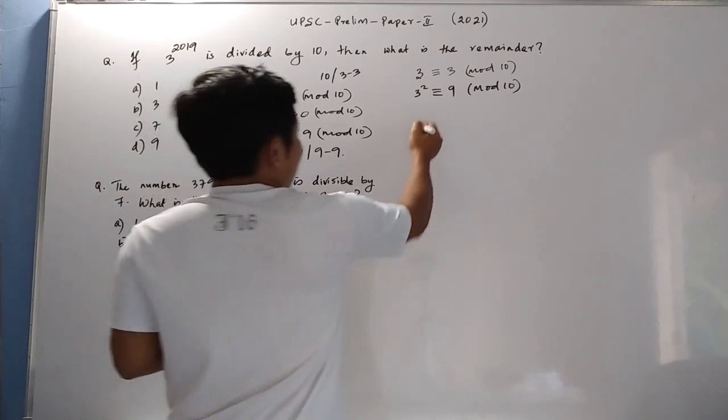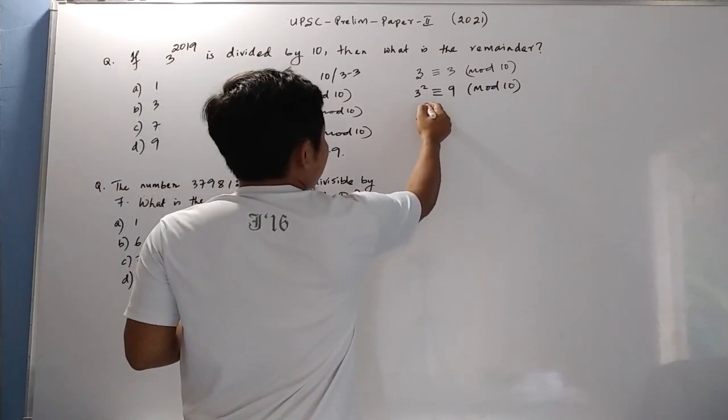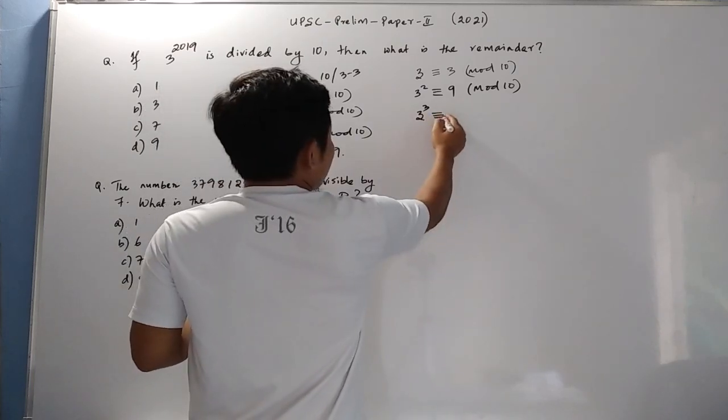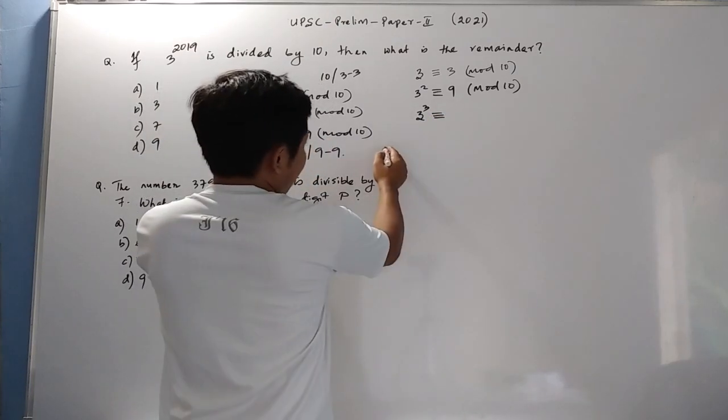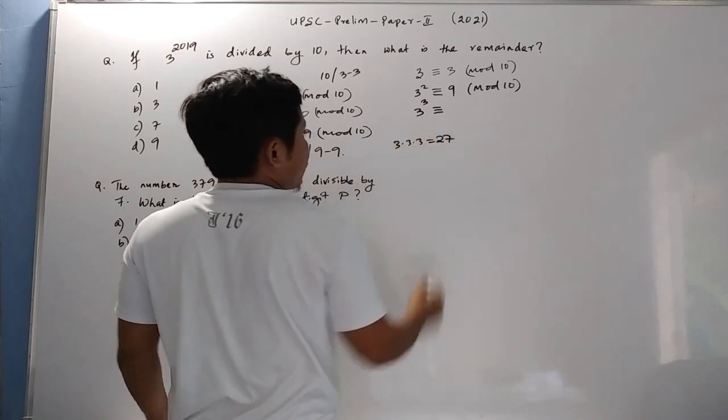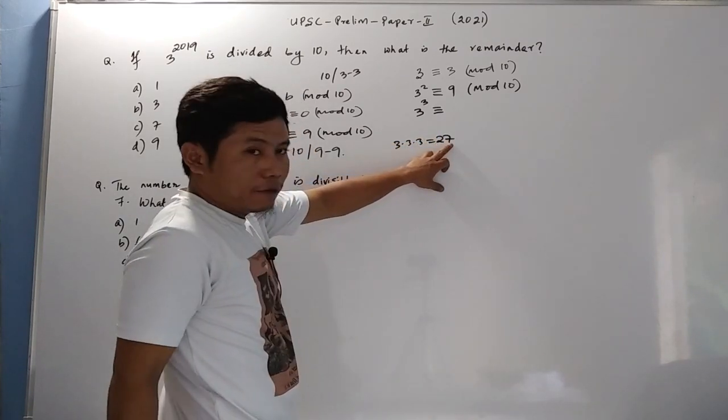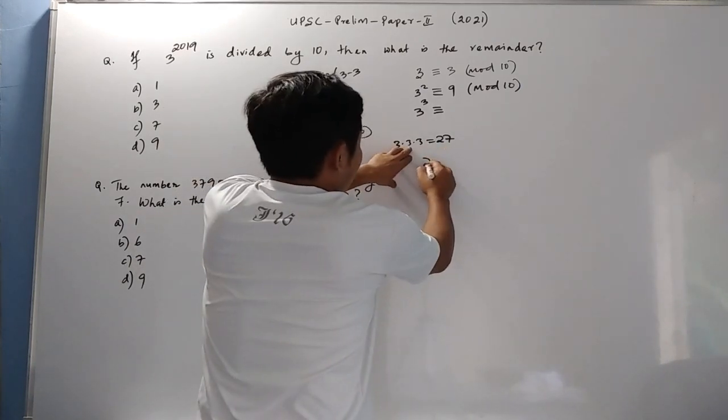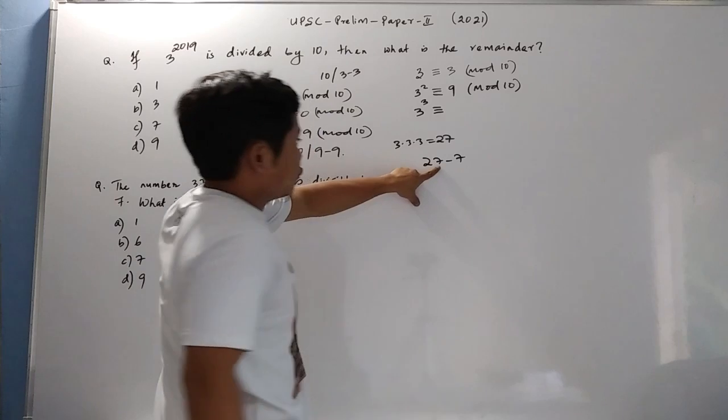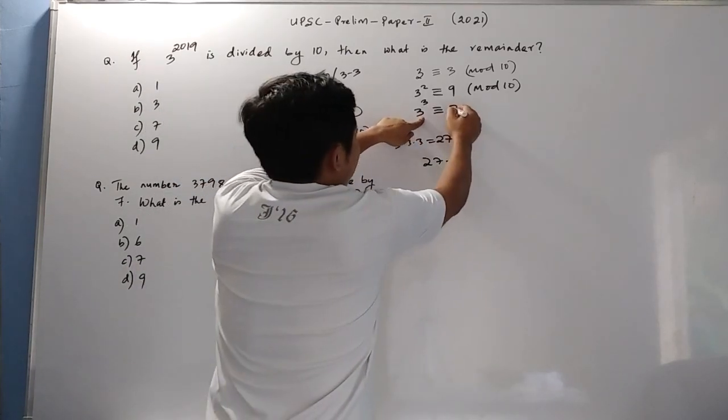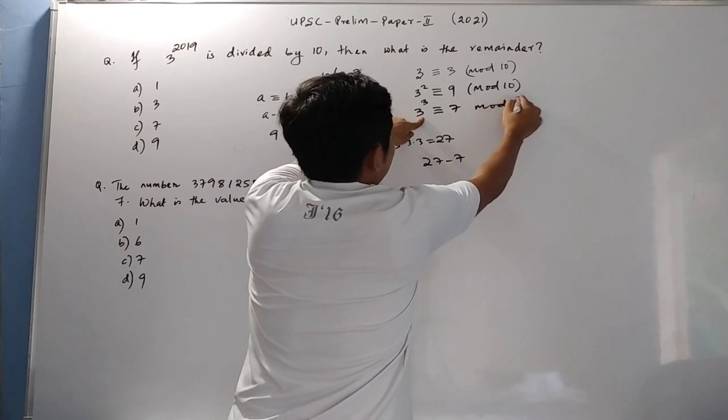We go on like this. We are raising the power to cube. 3 cube is 27. For 27 to be divisible by 10, we must subtract 7 from 27. That means 3 cube is congruent to 7 mod 10.